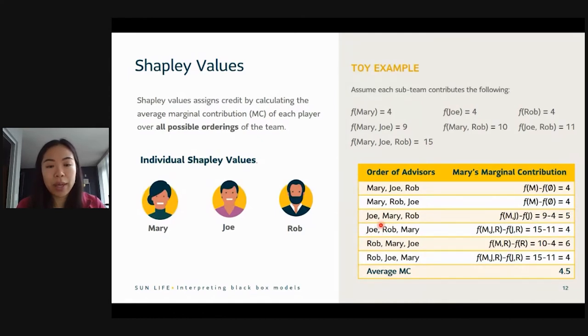Now, if Joe comes first and then Mary, so she's second to come in, the marginal contribution of Mary this time is M and J minus just J. So Mary and Joe, 9 minus 4, is 5. And then in the other scenario where Mary comes in second, but Rob came in first, the contribution is, the marginal contribution is Mary and Rob minus just Rob. So 10 minus 4 is 6. And then if Mary were to come in last, the calculation here would just be the contribution of all three people minus the contribution of the first two who came in first. So 15 minus 11 equals 4. And then this last scenario, same situation, Mary's last, but the other two flipped their position. It's still 15 minus 11.